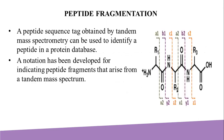The last fragmentation type is peptide fragmentation. As the name indicates, it involves amino acids and peptide chains. A peptide sequence obtained by tandem mass spectrometry can be used to identify a peptide in a protein database. A notation has been developed for indicating peptide fragments: fragment ions are indicated by A, B, or C if the charge is retained on the N-terminus, and by X, Y, or Z if the charge is maintained on the C-terminus. The subscript indicates the number of amino acid residues in the fragment.